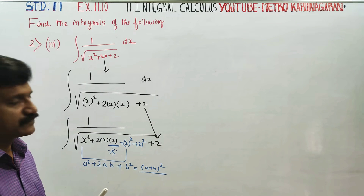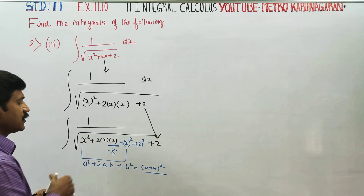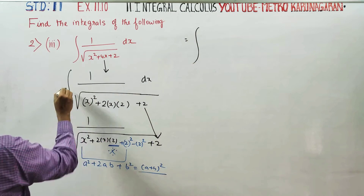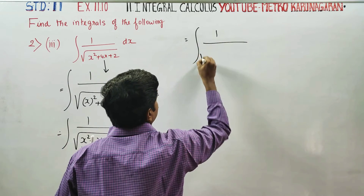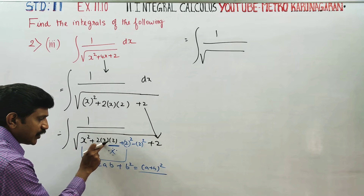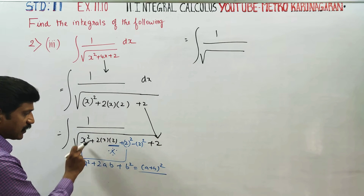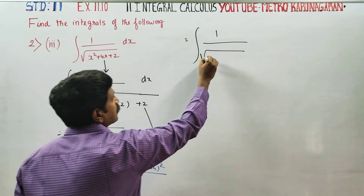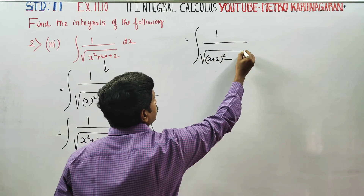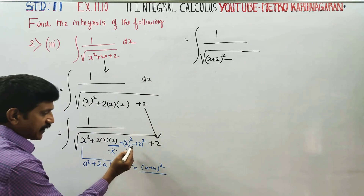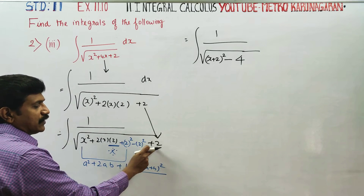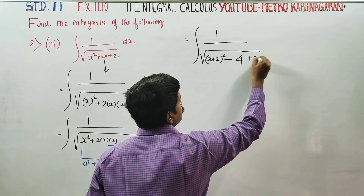Using the algebraic identity: a squared minus 2ab plus b squared equals (a plus b) whole squared. So we rewrite the expression under the square root as (x plus 2) whole squared minus 2 squared upon 4, plus 2, dx.